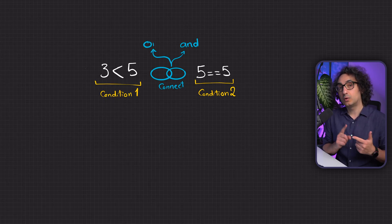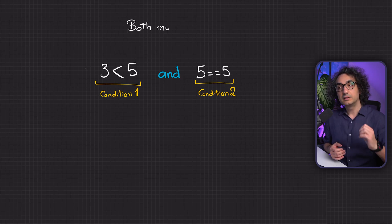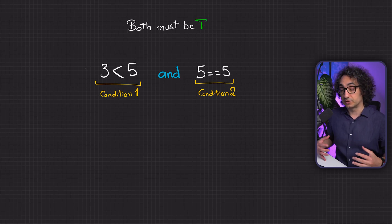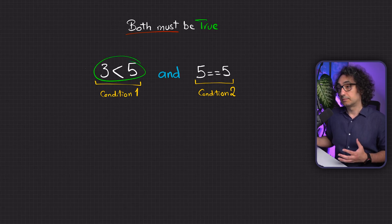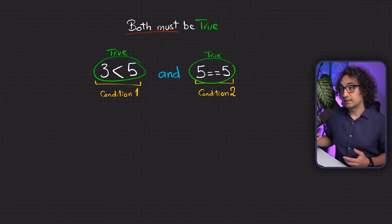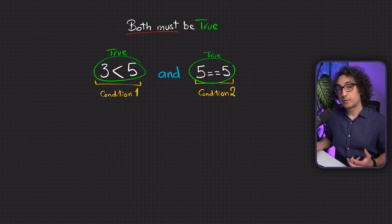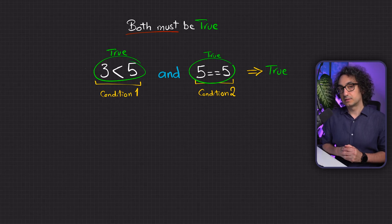You have two options: two logical operators — 'and' and 'or'. If you use the 'and' operator, you are telling Python to return true only if both conditions are true. For example, the first condition is true — three is smaller than five — and the second condition is also true — five equals five — so Python will return true.